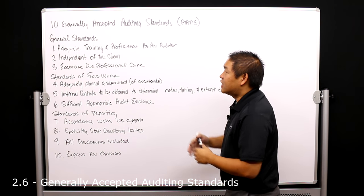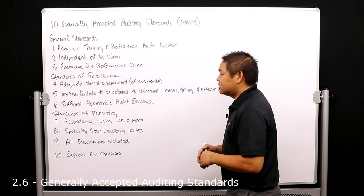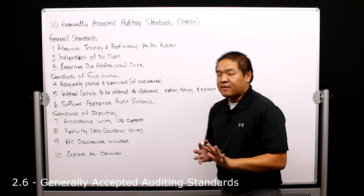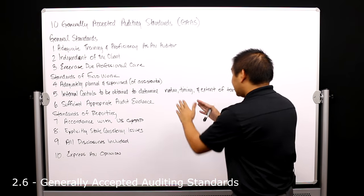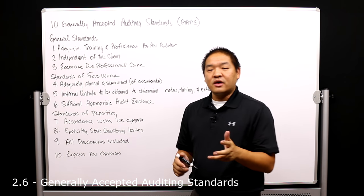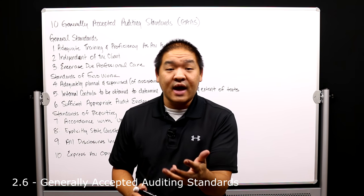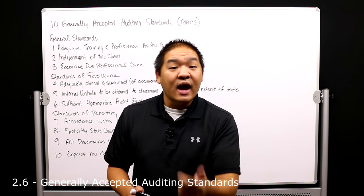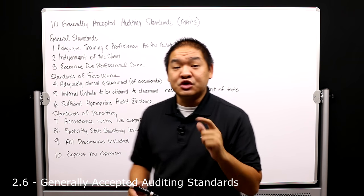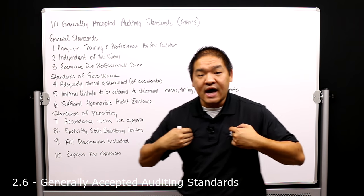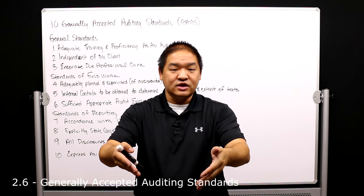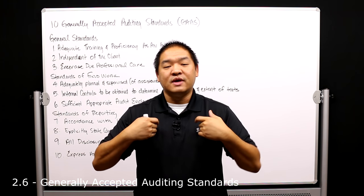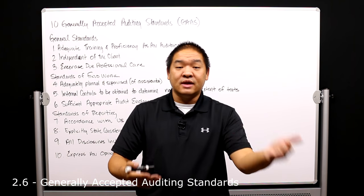The fifth GAAS, and the second standard of fieldwork, is that the auditor must obtain an understanding of internal control to determine the nature, timing, and extent of tests. When we go into a client, we need to understand the internal controls the company has implemented and determine whether they're working. Once we figure out if they're working, we determine the nature, timing, and extent of our own tests on their financial statements — essentially how much we need to test, what information we need, and when.